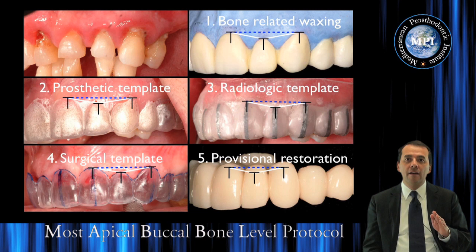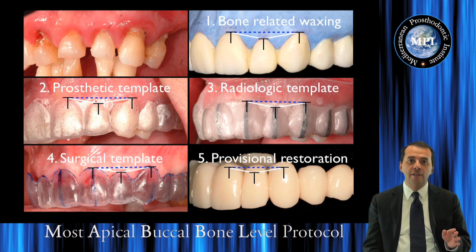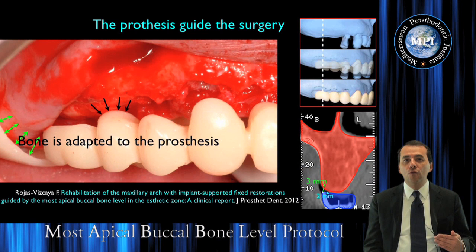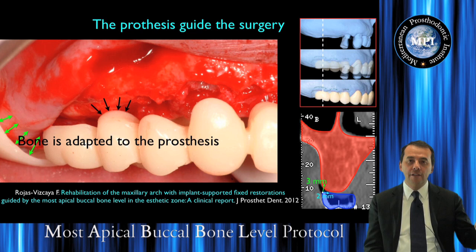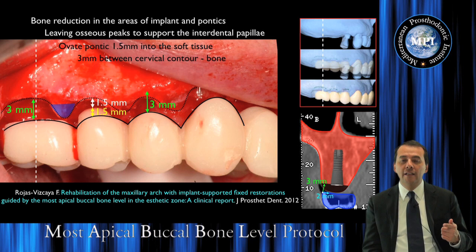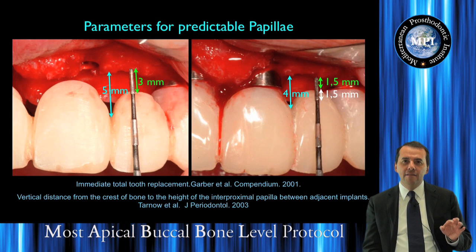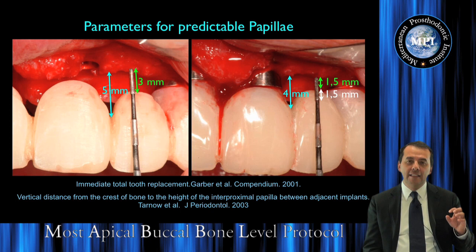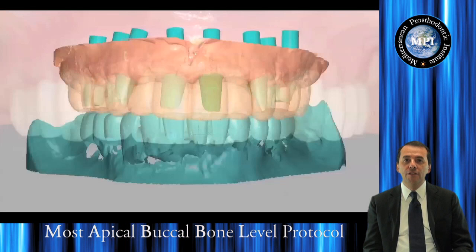I want to present all the protocol in a step-by-step format — how we can transfer all the aesthetic information from the laboratory to the provisional and from the provisional to the patient. How we can relate all this information from the waxing, from the prosthetic template, in the radiologic template, surgical template, and in the provisional restoration. I also want to go deep into the details of the surgical aspect and how we can integrate the surgery with the prosthesis — how we can manipulate the bone to obtain the crown we are planning, and how we can intraorally make all these analyses and changes in our prosthesis or in the bone of the patient, until we obtain our provisional restoration.